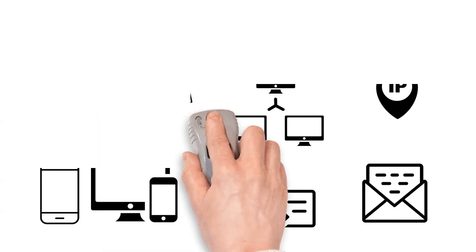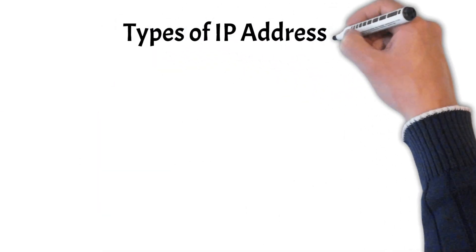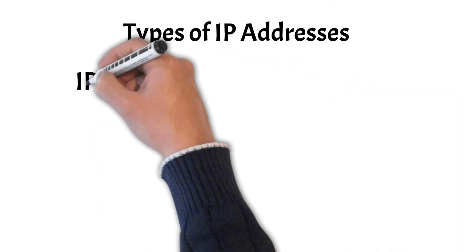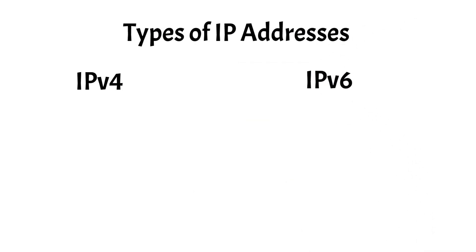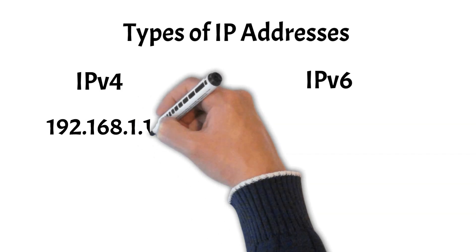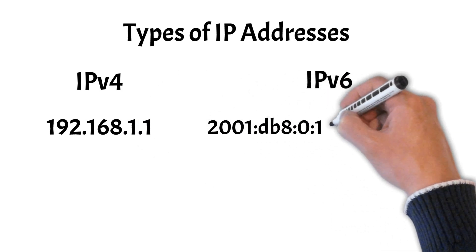Now let's look at the different types of IP addresses. There are two main types: IPv4 and IPv6. The IP address you saw a moment ago is an example of IPv4. An example of IPv6 looks like this.